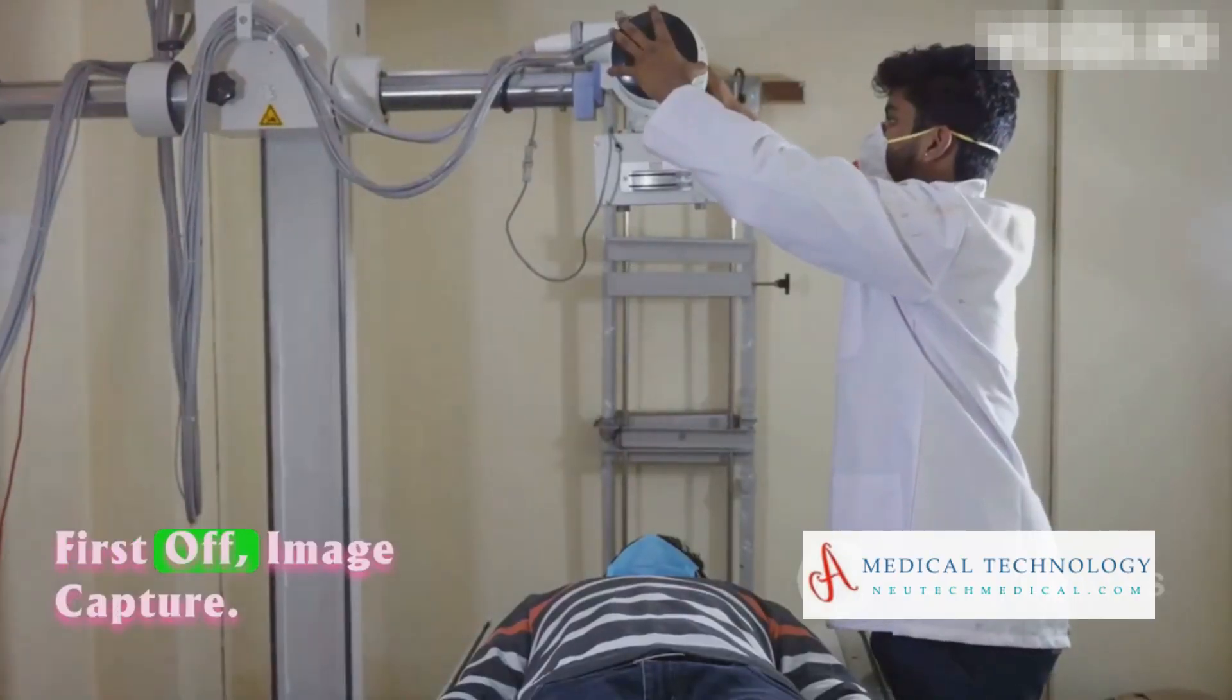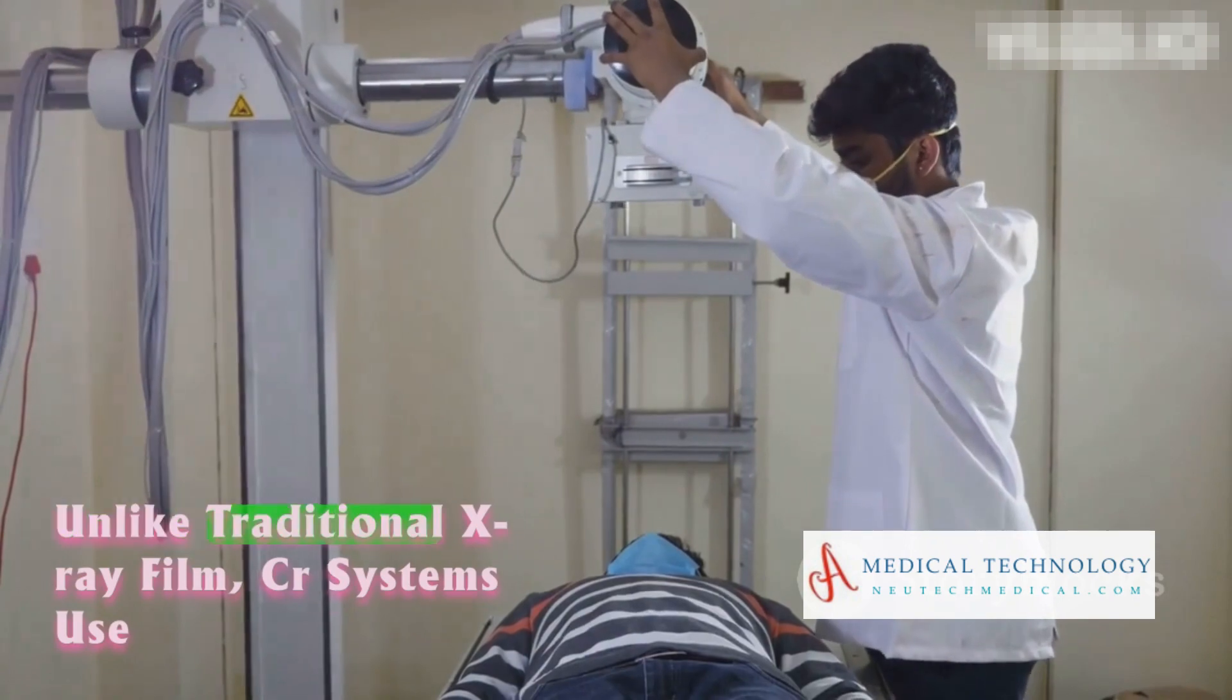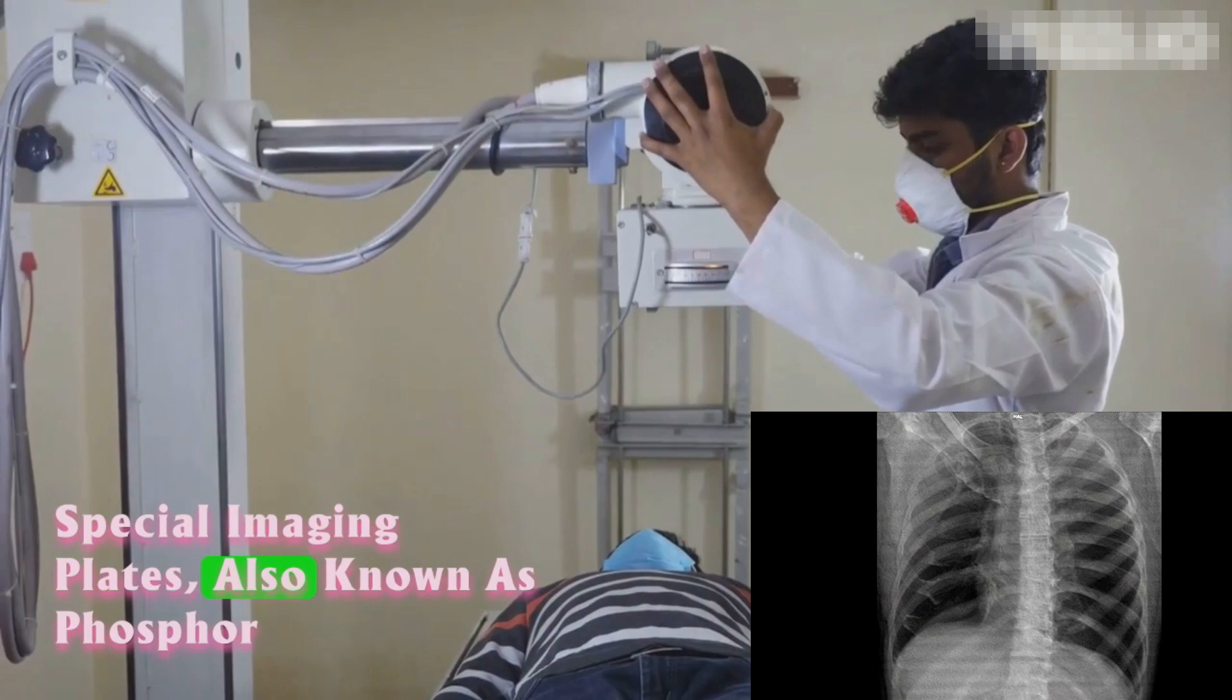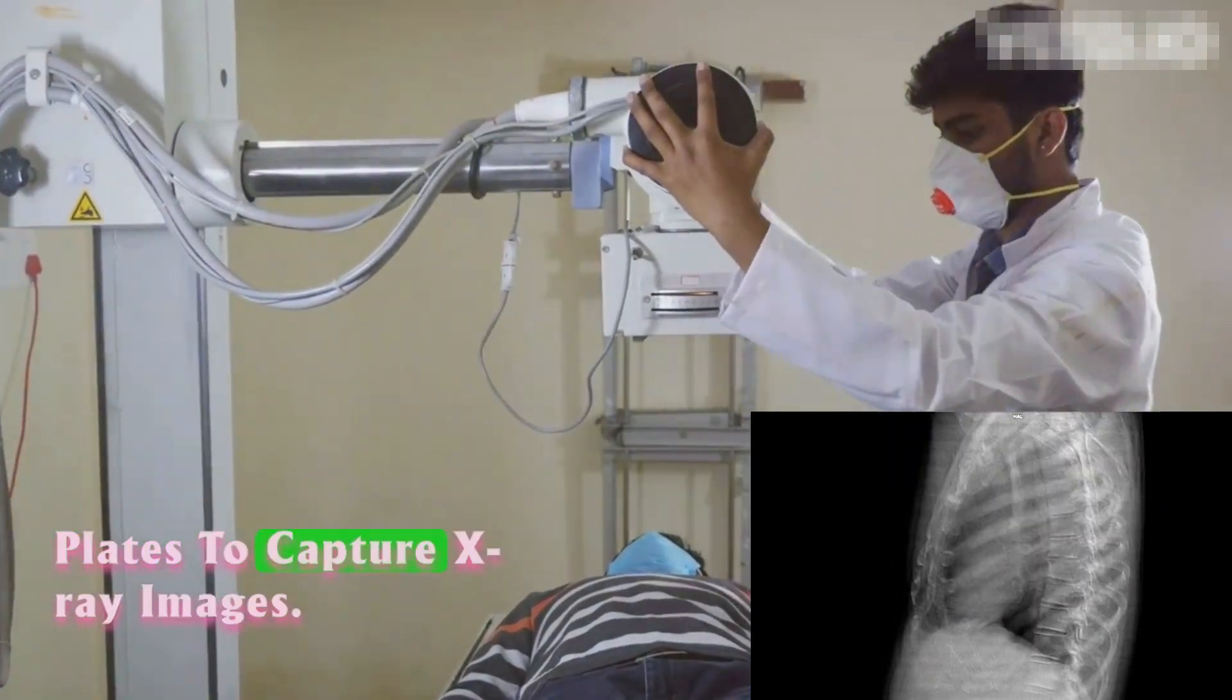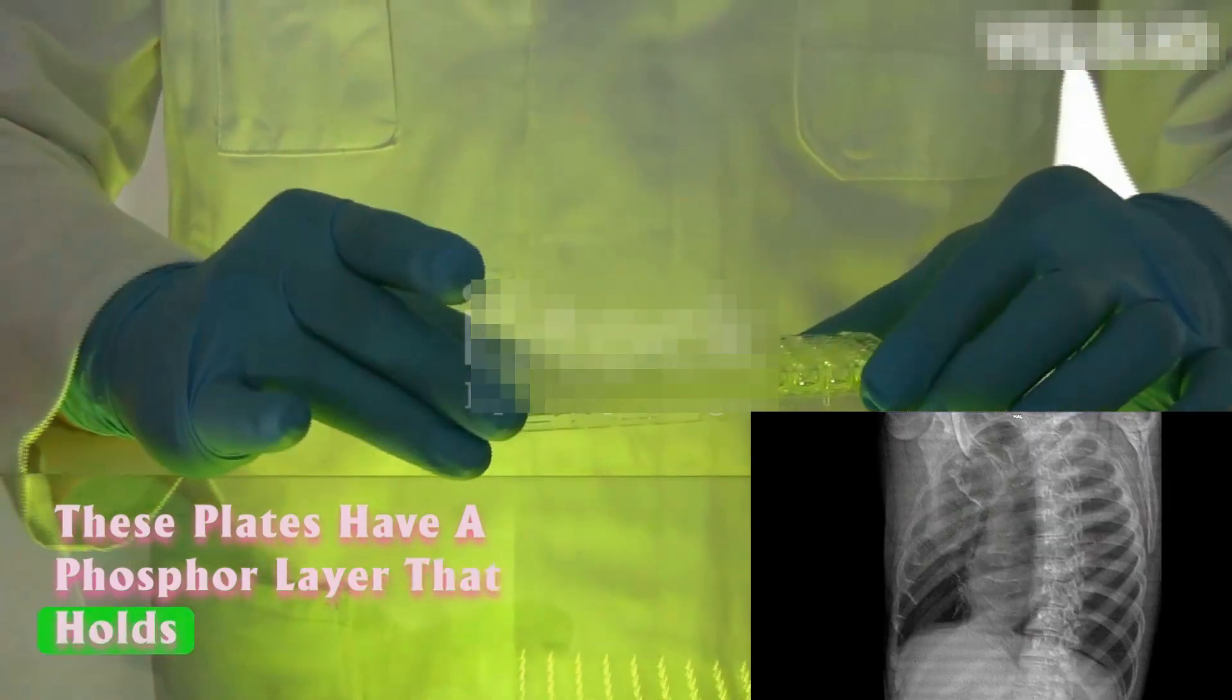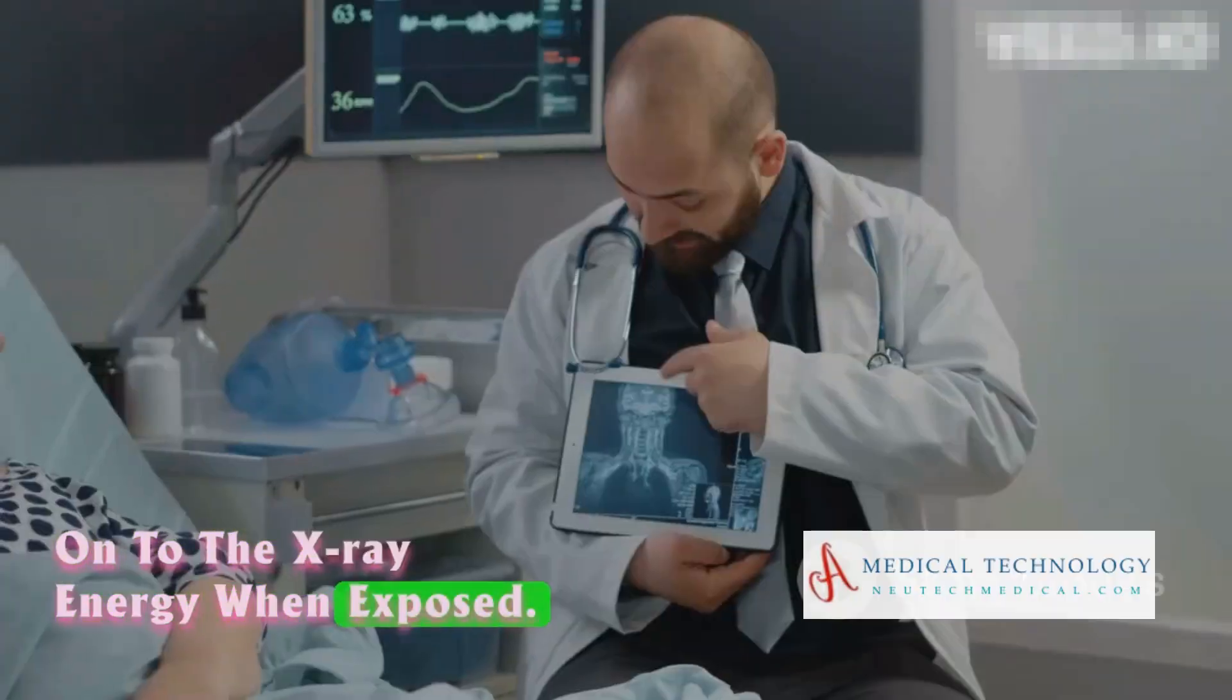First off, image capture. Unlike traditional X-ray film, CR systems use special imaging plates, also known as phosphoplates, to capture X-ray images. These plates have a phospholayer that holds on to the X-ray energy when exposed.